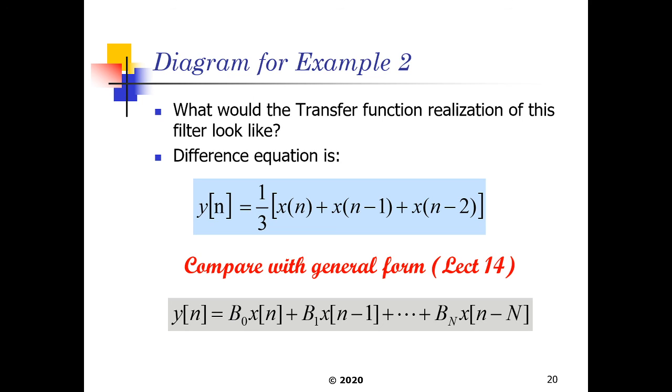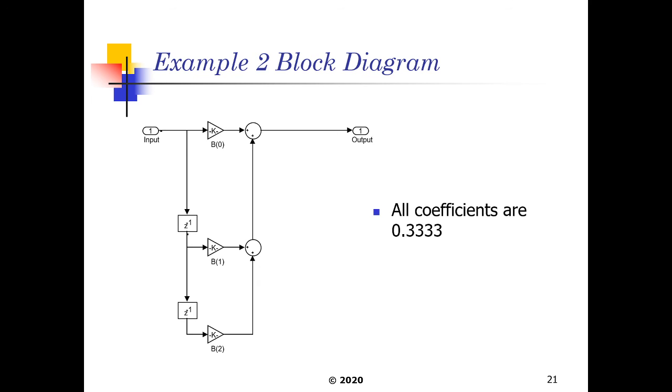The block diagram for this, because there's no feedback, it's just going to be a full feed forward system. So this will be our no delay, our first delay, and then our second delay, n, n minus 1, n minus 2 accordingly. And everything just feeds from the input straight to the output, no feedback.